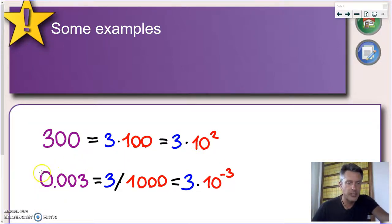And this is a shorter way to represent this number using the powers of 10. In a similar fashion, we can say that 0.003, which is 3,000th, 3 over 1,000, can be written as 3 times 10 to the power of minus 3.